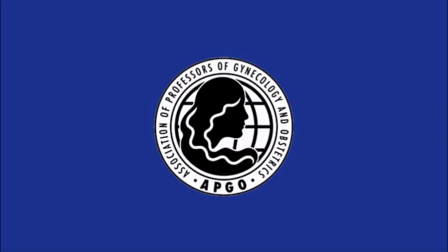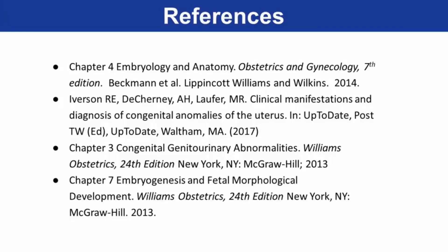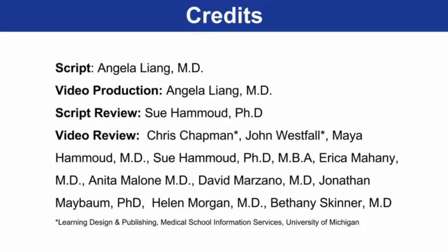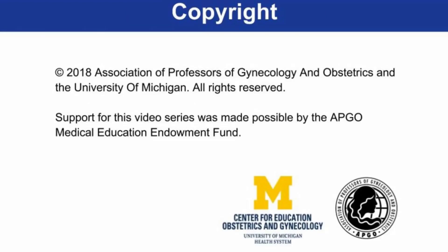This concludes the APCO Basic Science video on Müllerian anomalies. We have discussed the embryologic origins of the reproductive system, the role of the SRY gene, anti-Müllerian hormone, and testosterone on sexual differentiation, and the errors that result in Müllerian anomalies. Thank you.